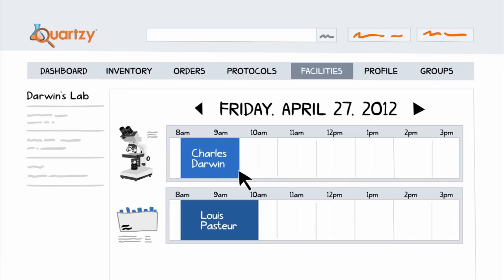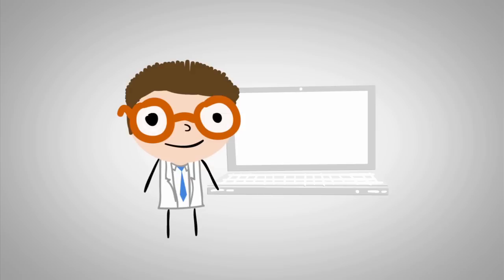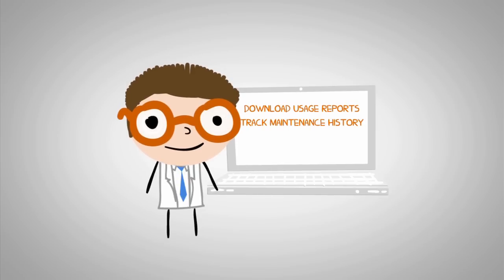And thanks to Quartsy's intuitive scheduling module, everyone will be able to see equipment availability from a shared online calendar. All sign-ups are recorded, so you can download usage reports, track maintenance history, and much more.